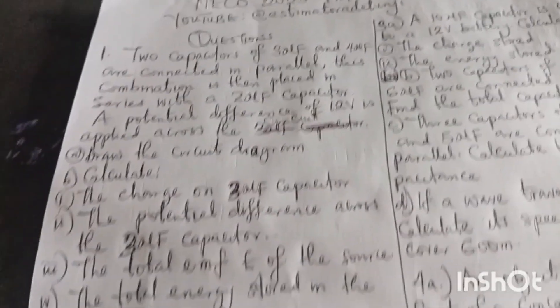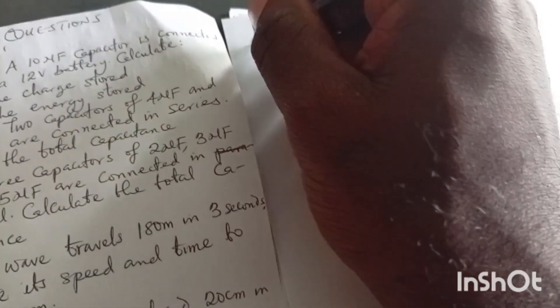A potential difference of 12 volts is applied across the circuit. Draw the circuit diagram to do the calculation. Without wasting time, let's go. The first question, let me call this one number one.